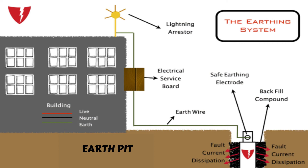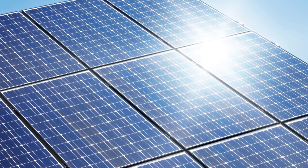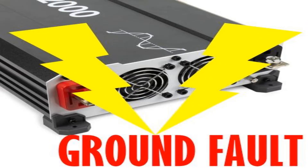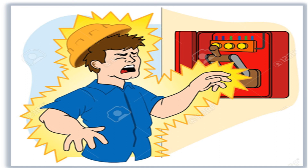The last component in the protection system is earthing. Earthing is one of the most important and also most neglected components of electrical installations, and this happens in solar plants too. Critical components like inverters require a stable earth connection for their trouble-free performance. Earthing is also needed to protect any person from an electrical shock due to accidental exposure to current-carrying components.